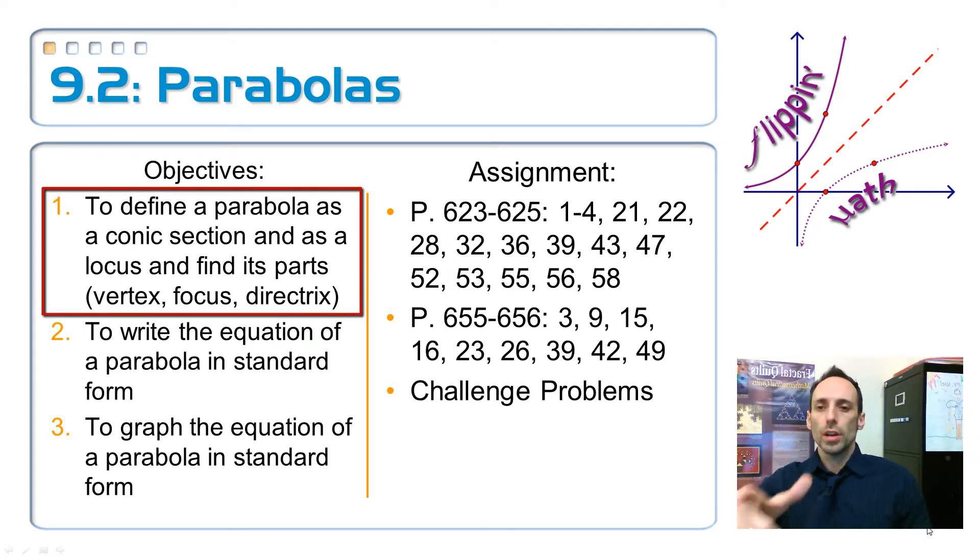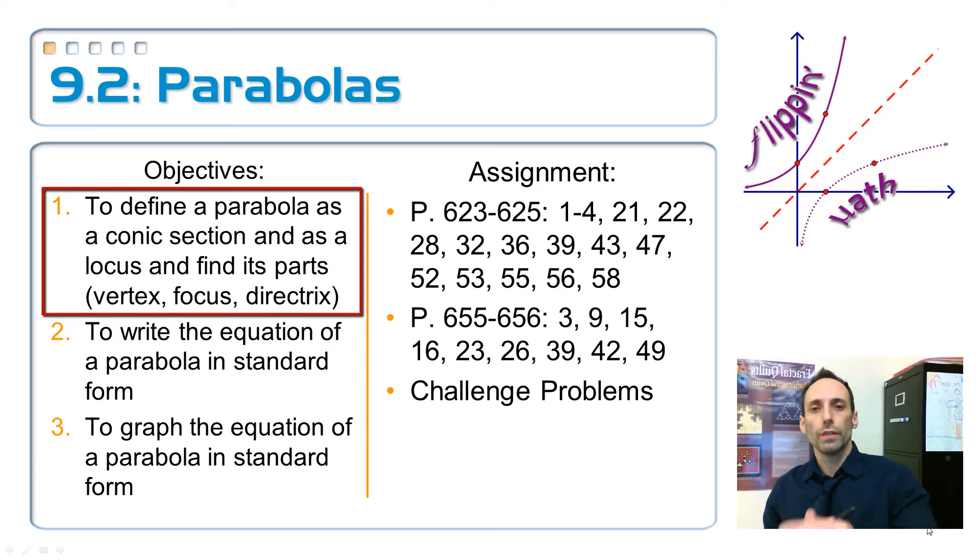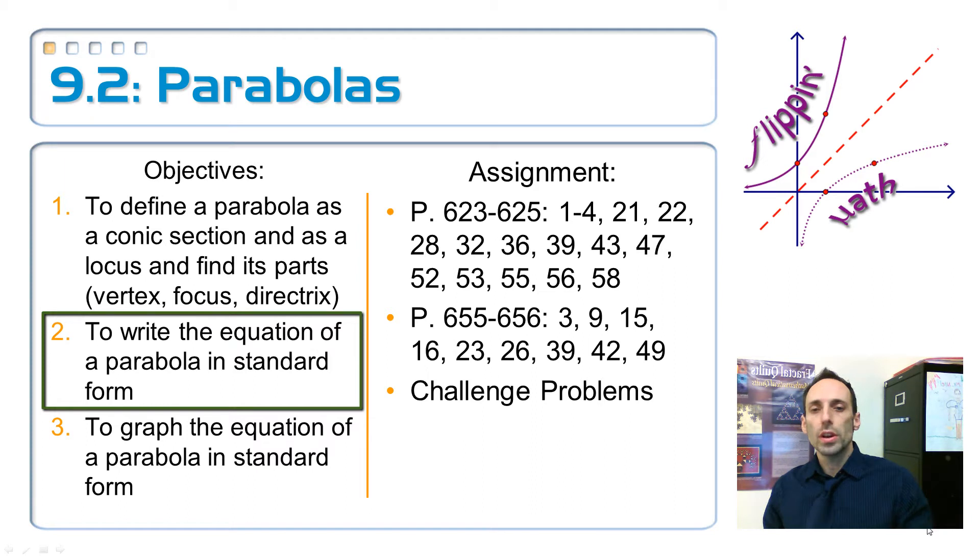So objective one, we're going to define a parabola as a conic section and as this thing called the locus. Not a bug, a locus, not locust. Anyway, and we've got some parts there. We've got vertex, which you're familiar with, and these two other parts that you've probably never heard of, focus and directrix. One of them's a point, one of them's a line. Objective two, you're going to be able to write the equation of the parabola in standard form.